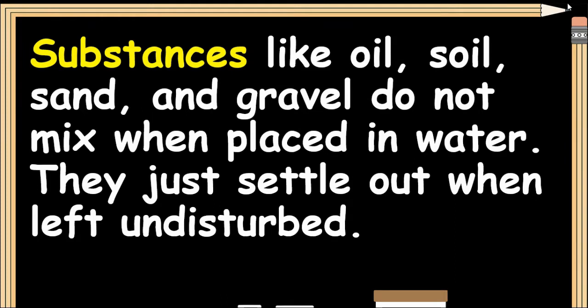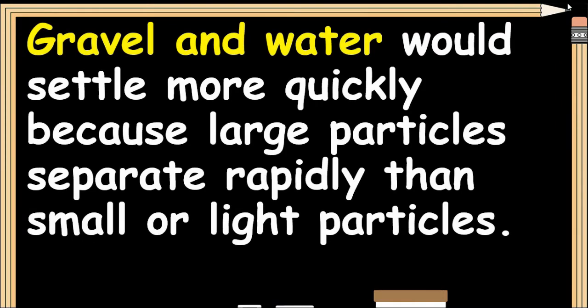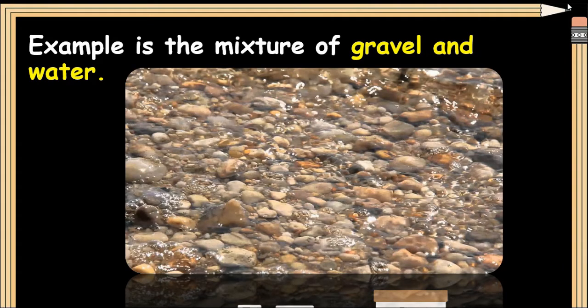Substances like oil, soil, sand, and gravel do not mix when placed in water — they just settle out when left undisturbed. The particles of gravel and water would settle more quickly because large particles separate more rapidly than small or light particles. Suspension is a heterogeneous mixture.